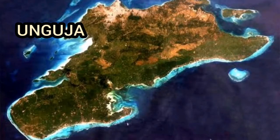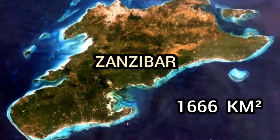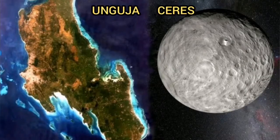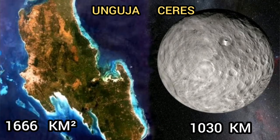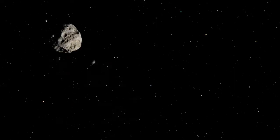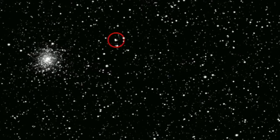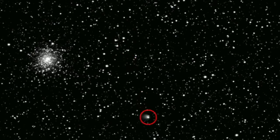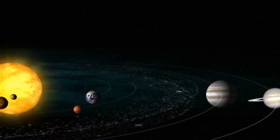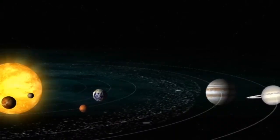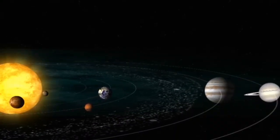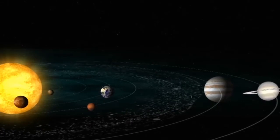For comparison, the island of Unguja in Zanzibar has one thousand six hundred and sixty-six square kilometers, which means that Ceres is much larger than Unguja island. The smallest asteroids are some few meters, and others are even smaller to the extent that we cannot see them. Many asteroids, including Ceres, are found in the asteroid belt which is between Mars and Jupiter.